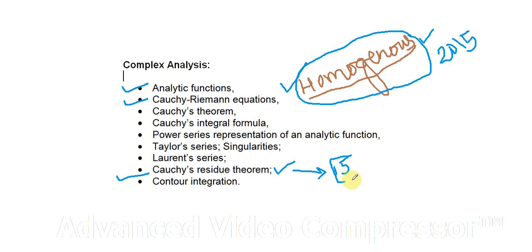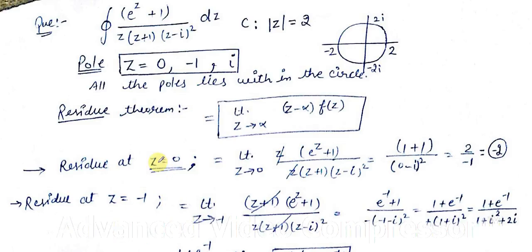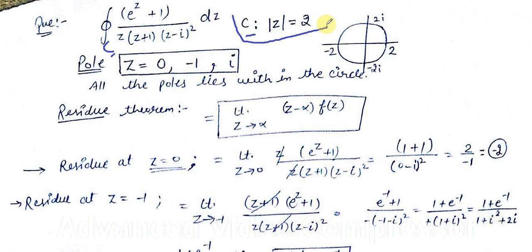This is a 15-mark question — very simple, no worry. The question asks us to integrate the function e raised to the power (z+1), divided by z·(z+1)·(z−i)², dz. The curve C is defined as |z| = 2, which means a circle with a radius of 2 units centered at the origin.